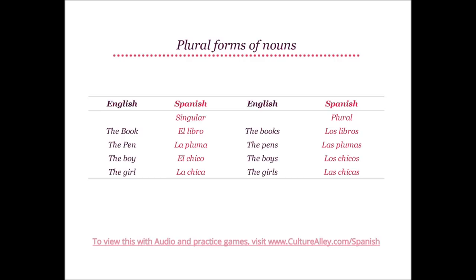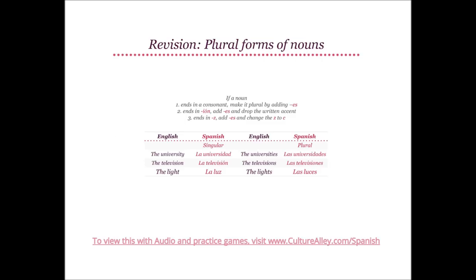Note that all of these examples ended in O or A. Hence, if a noun ends in a vowel — namely O or A — then just add an S to convert it to its plural form. If a noun ends in a consonant, then make it plural by adding -es. For example, in the singular form the university translates to la universidad, and in the plural form the universities translates to las universidades.